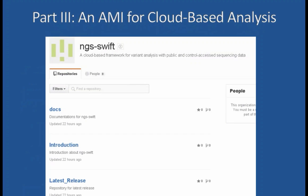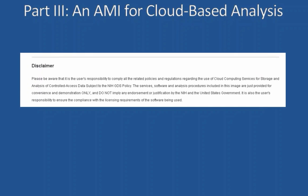Many people ask how they would use BWA directly with SRA accessions, particularly in dbGaP. What I would suggest at this point is an Amazon machine image called NGS Swift. We will very likely have similar cloud images for other cloud providers in the near future. First, I would like to make everyone aware that using NGS Swift, you are tacitly acknowledging that you will comply with all the policies and regulations surrounding dbGaP data.